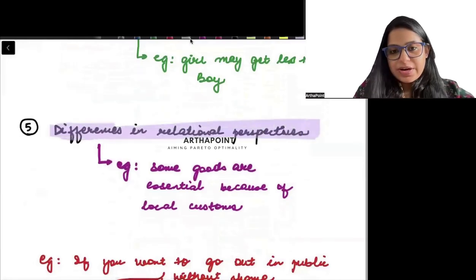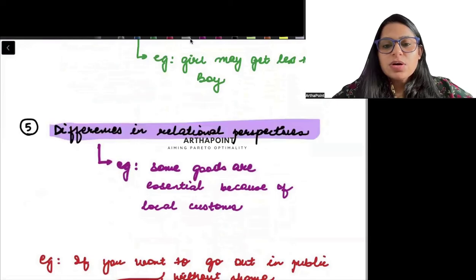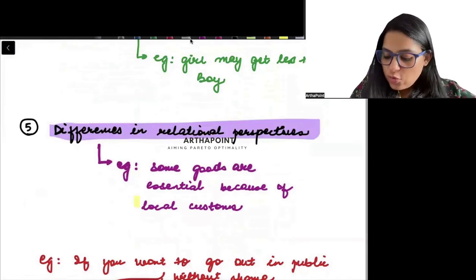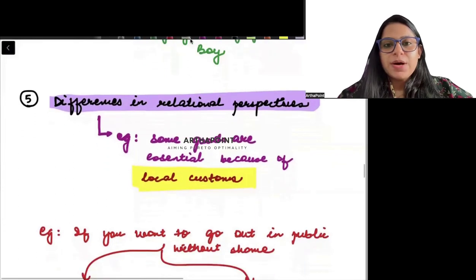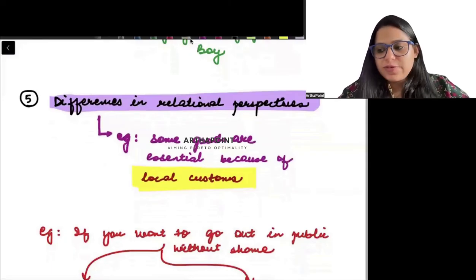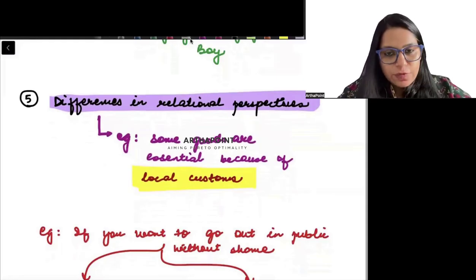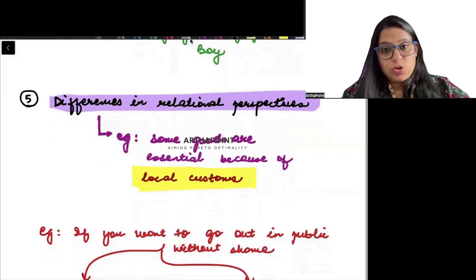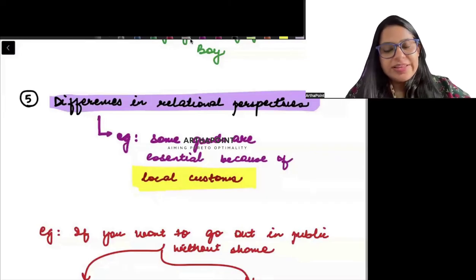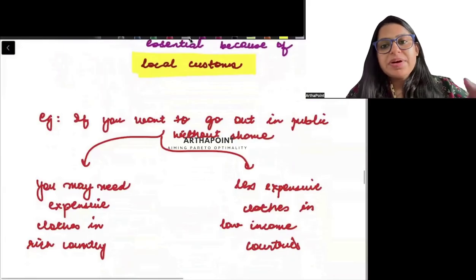Difference in relational perspective. Now sometimes it can happen that there are some goods which become essential because of local customs that you need to purchase even if you don't want to. Suppose I tell you that it is compulsory for everyone to build a temple in their house if you are living in region A. So you will be spending some part of your income on the temple. I have made that as a custom. Whereas in state B I haven't made any custom like that. So in state B therefore there is no need of this temple. They are free to spend their money on whatever they want. Difference in these perspectives can also make you spend money on a particular thing.